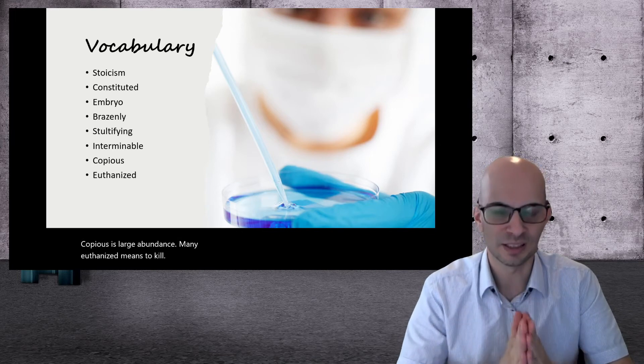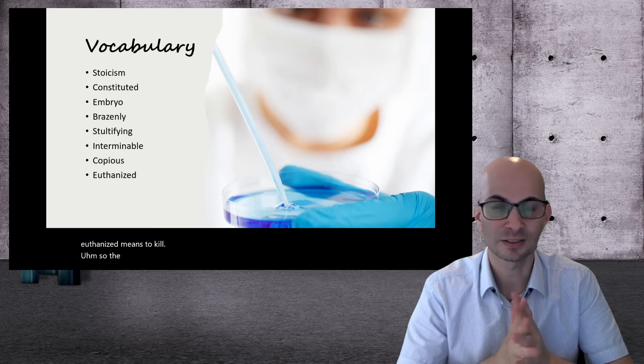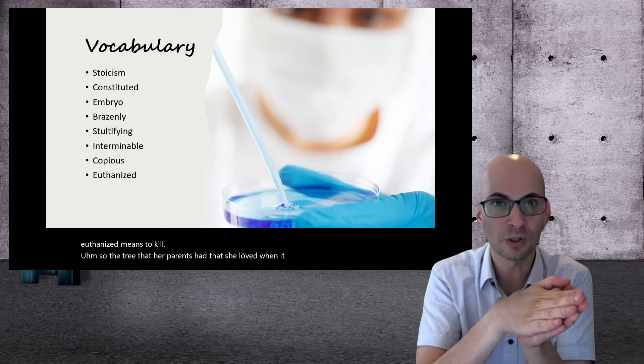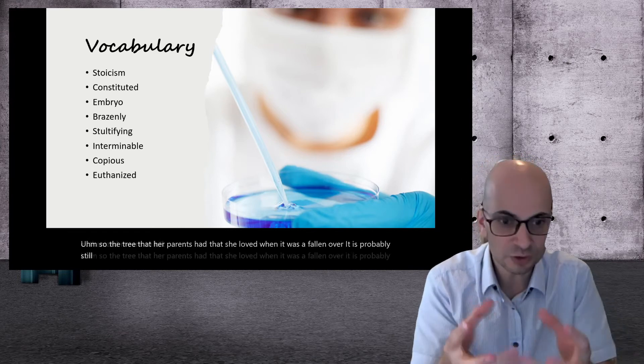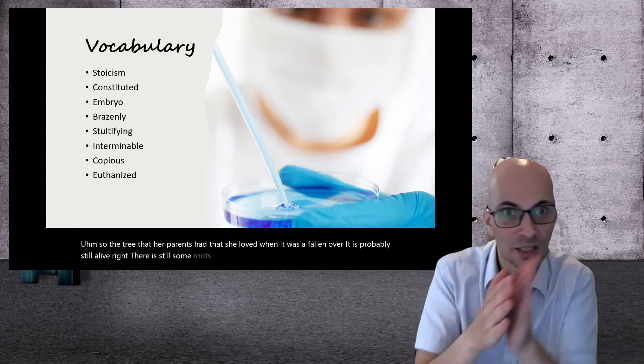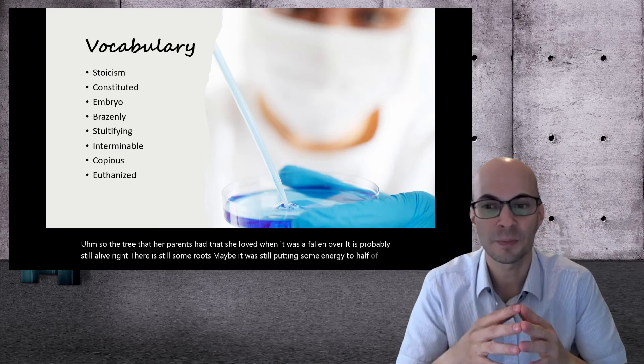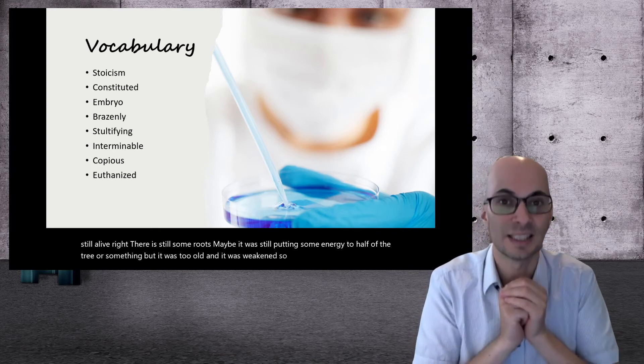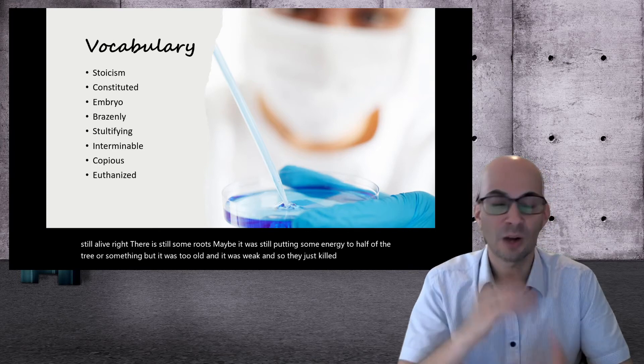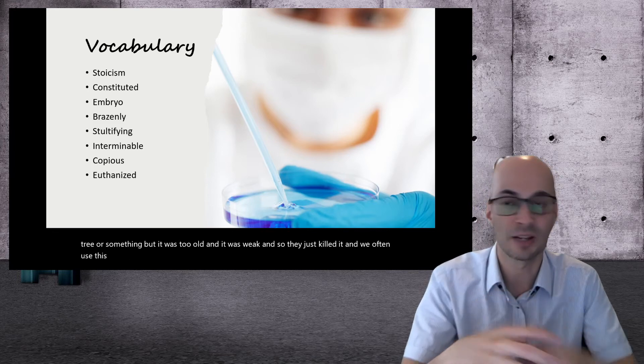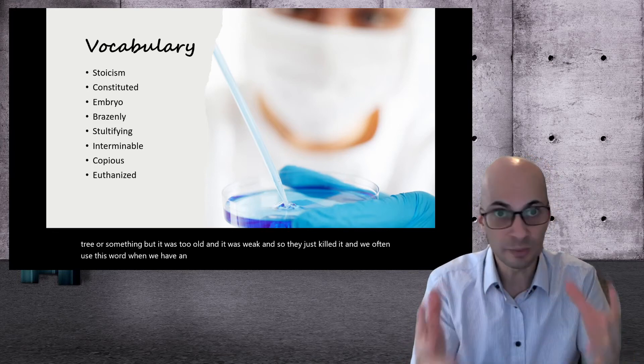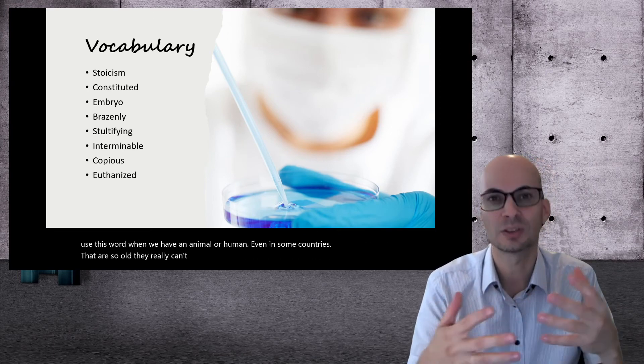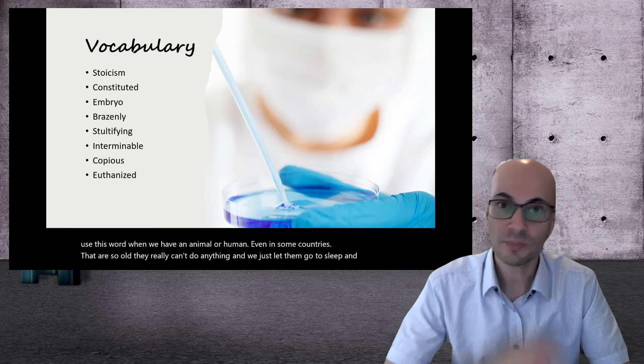Euthanized means to kill. So the tree that her parents had and that she loved, when it was fallen over, it was probably still alive, right? There were still some roots. Maybe it was still putting some energy to half of the tree or something, but it was too old and it was weak. And so they just killed it. And we often use this word when we have an animal or human even in some countries that are so old, they really can't do anything. And we just let them go to sleep and die. Euthanized.